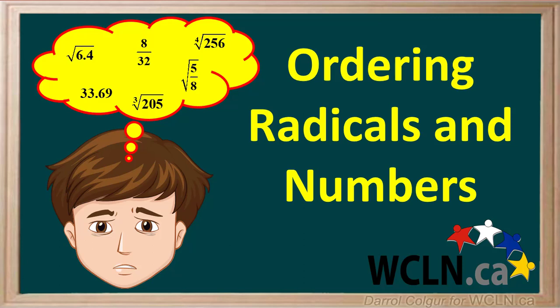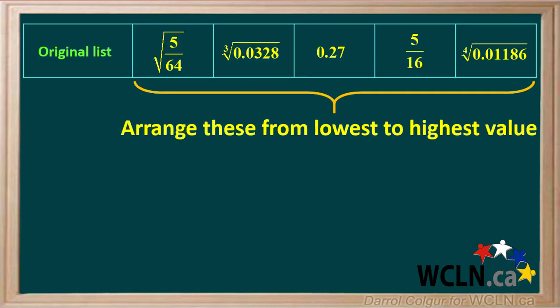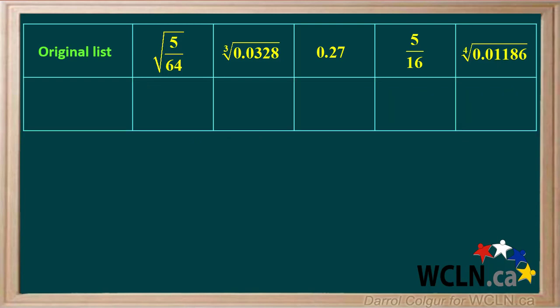Sometimes we have a list of numbers in various formats, such as radicals, fractions, or decimals, and we're asked to order these from lowest to highest value. Notice they're in several different formats, which makes it impossible to compare their values the way they are. To make these easy to compare, we can use a calculator to convert all of these to approximate decimal numbers.